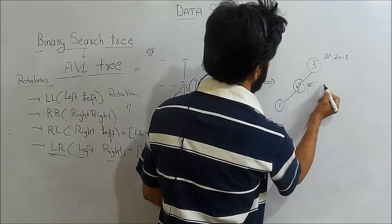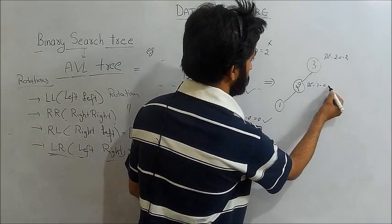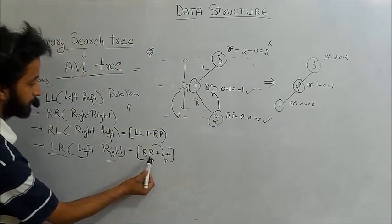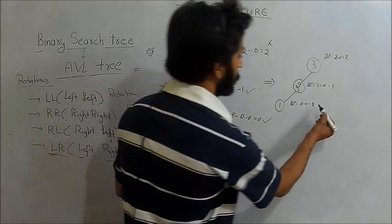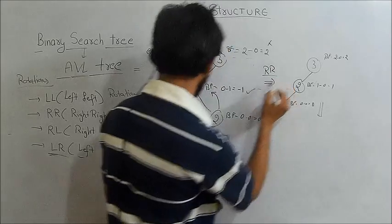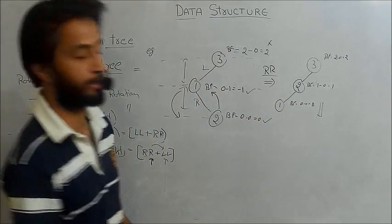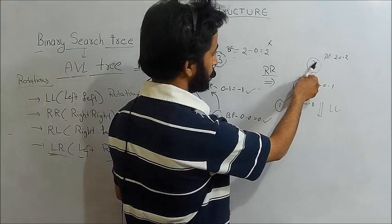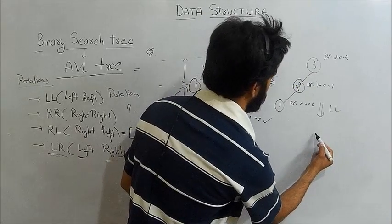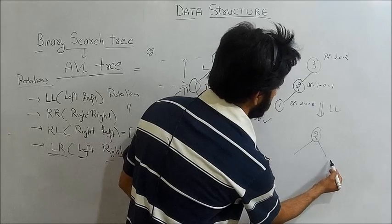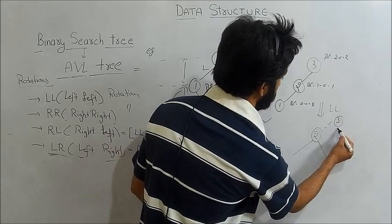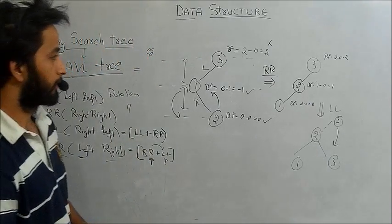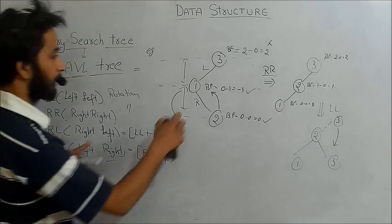After RR, the balance factor is two minus zero which is two, one minus zero which is one, and zero minus zero which is zero. After applying RR, we then apply LL rotation. In LL rotation, two and three nodes rotate clockwise, and the resultant tree is obtained after applying RR and then LL.